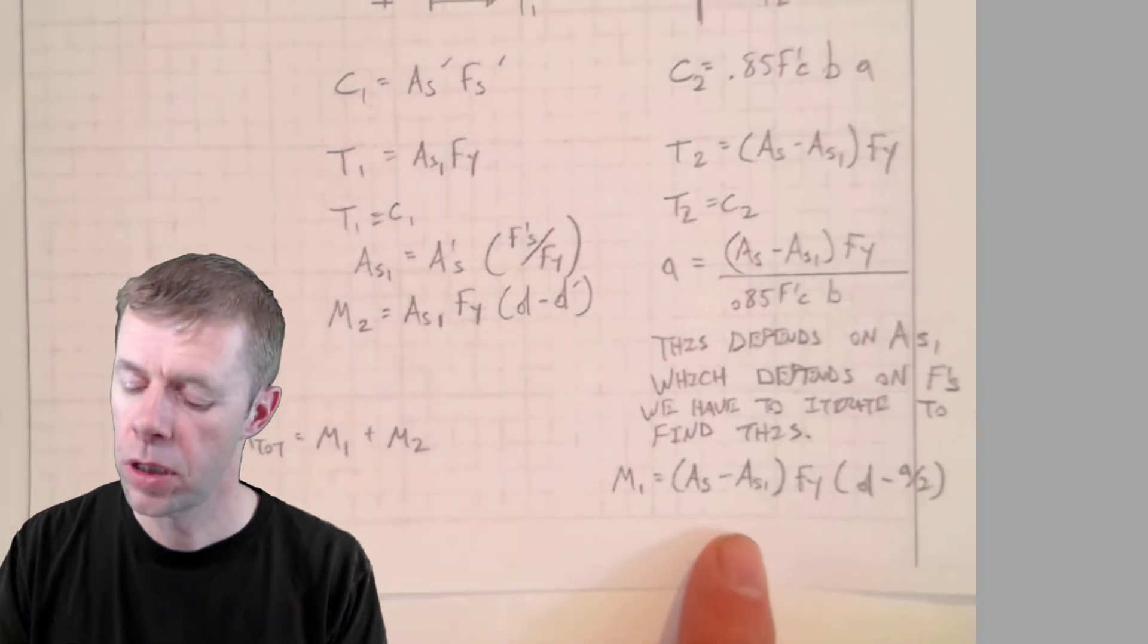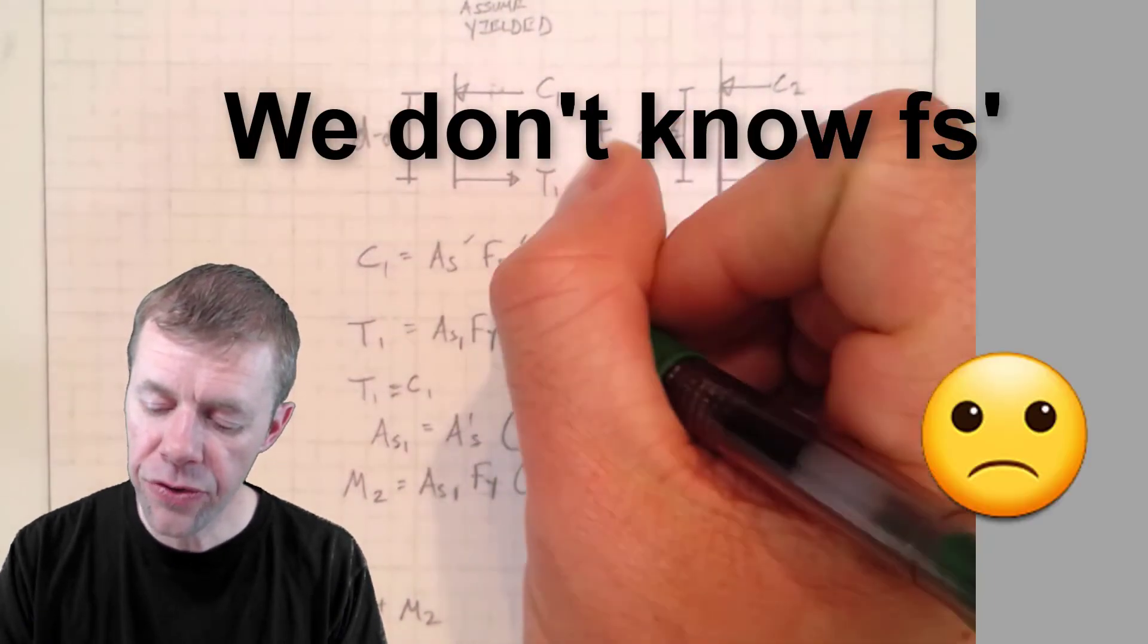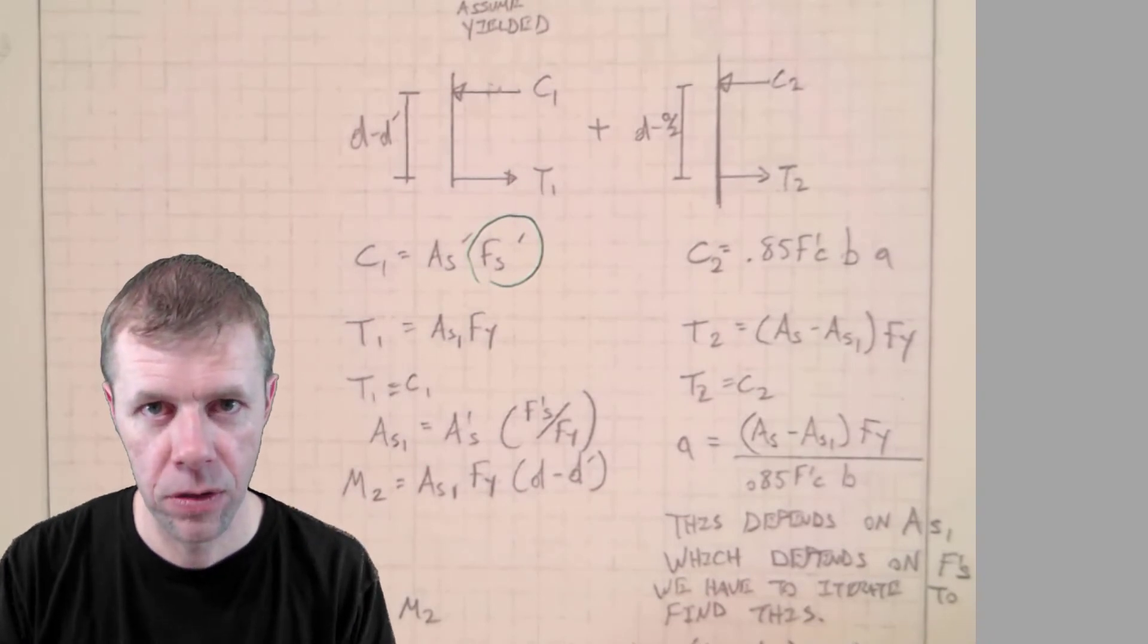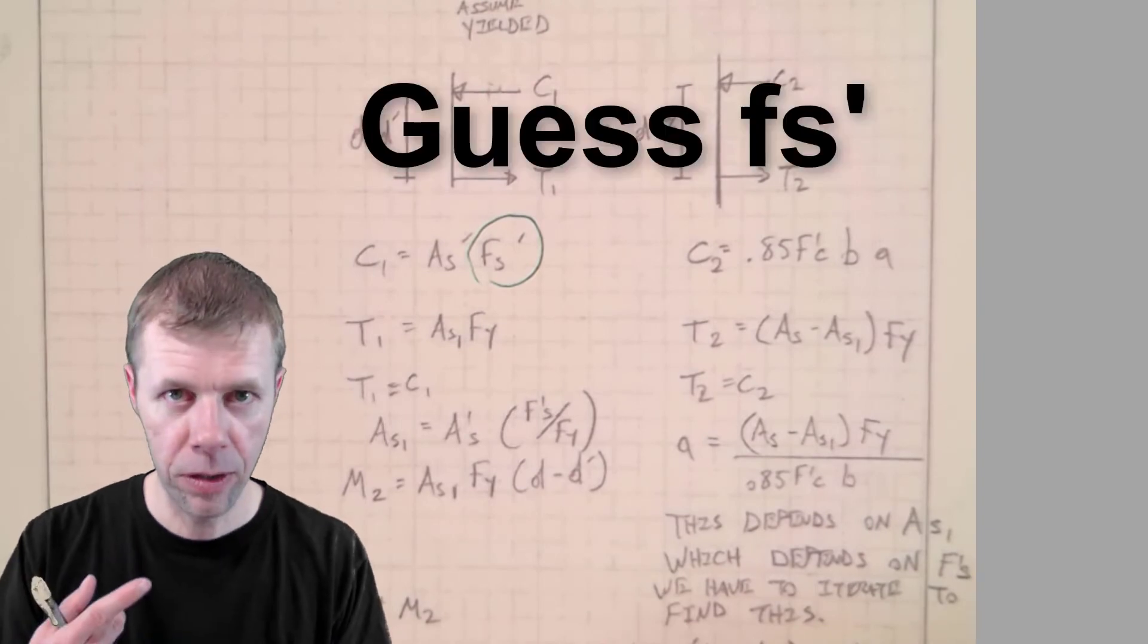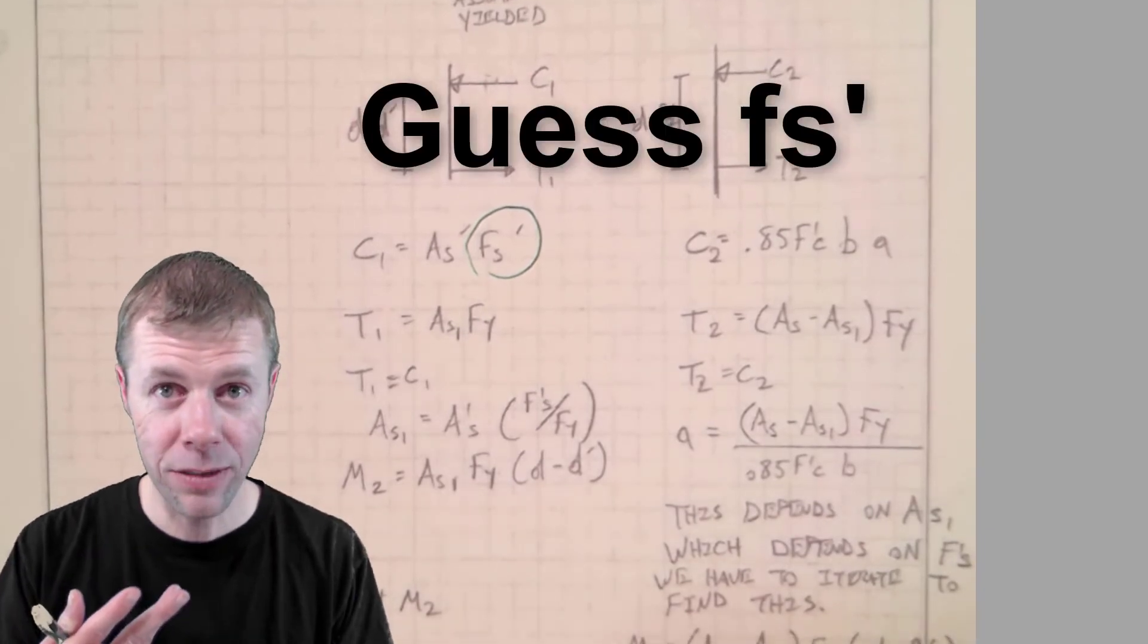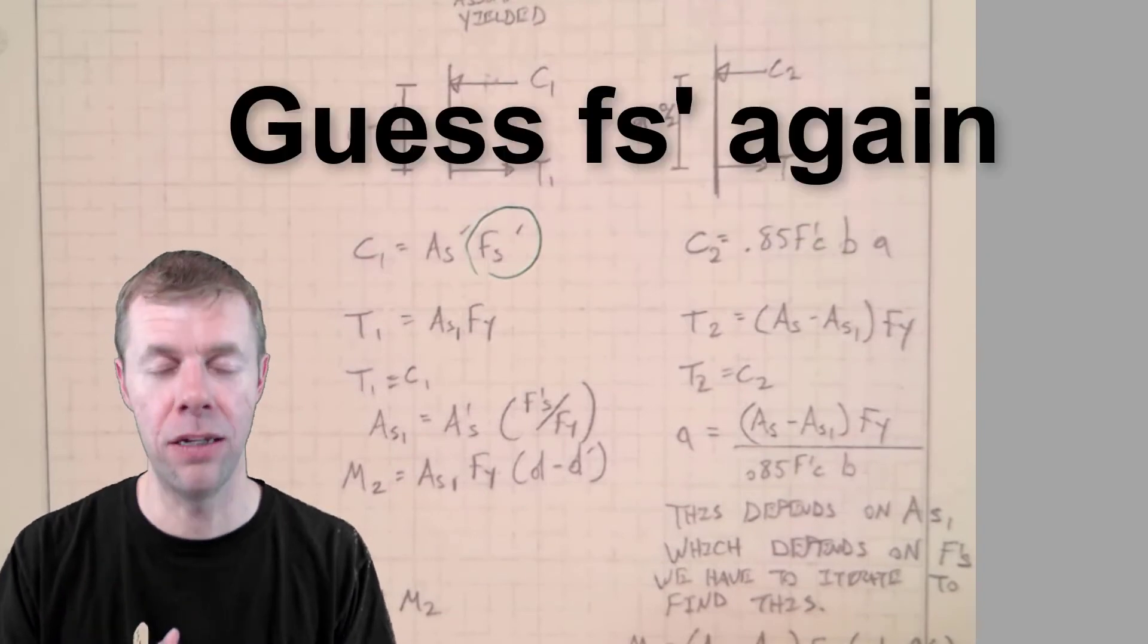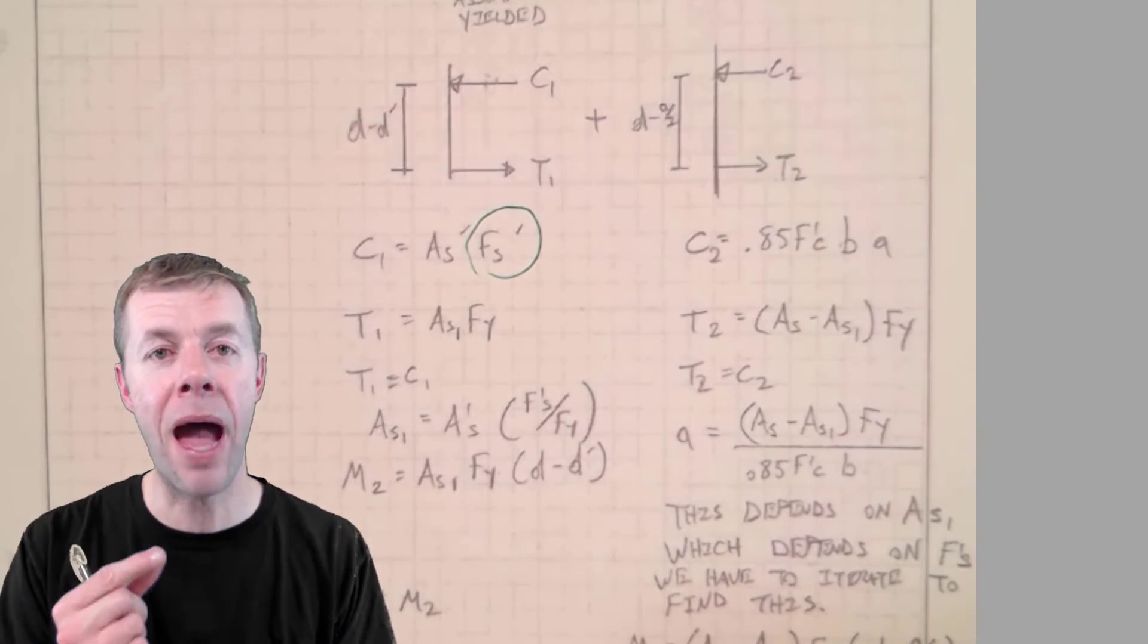Here's the problem. We don't know what this number is. So what we're going to have to do is we're going to have to guess the number, go through, see if it's right, and then check it. And if it's not, we have to guess again and keep doing that again and again and again until they match.